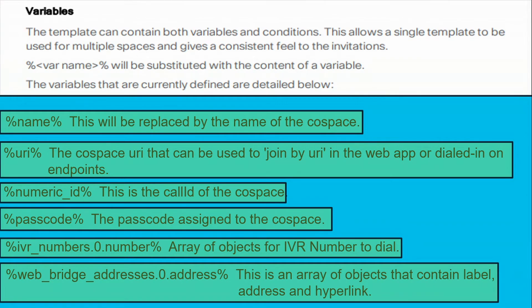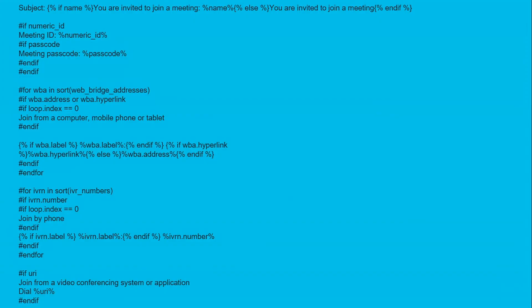Here's an example of a template we might have configured. You'll note the subject header, some conditions, the numericID with a nested loop, the web bridge address, and other configurations. This is a good stopping point to move on to the next video, where we'll do a demonstration of how to configure the invitation templates and see the caveats and mistakes people can make when creating their invitation template. I'll see you on the other side.